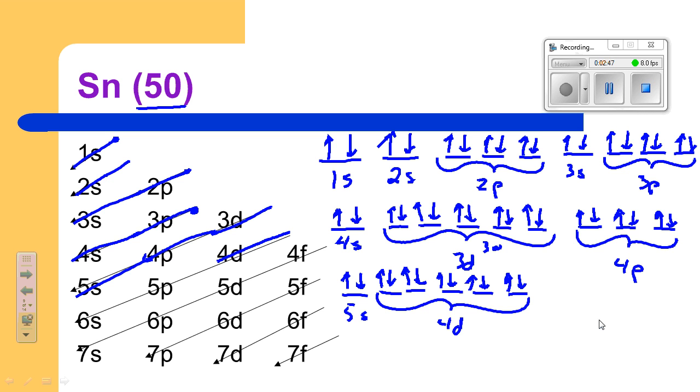We were at 30 up here. So it's 6 more, 8 more. So we're at 48 now. So we just need 2 more. And that's going to take us through into 5p. But not through 5p. And I only need 2 electrons.